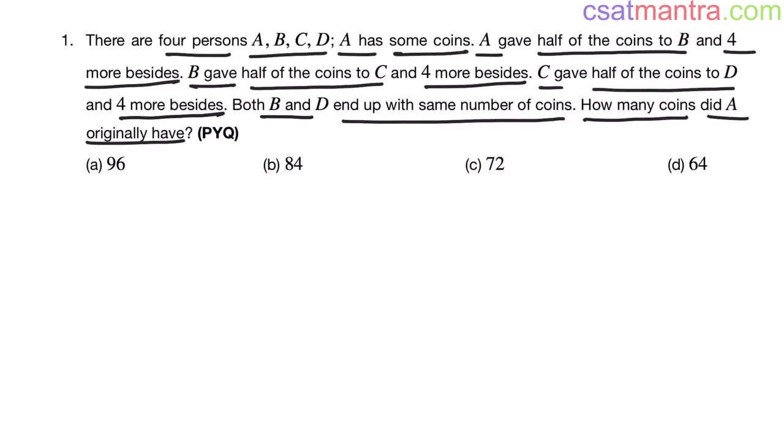This is a previous year question my friends. This question is from algebra chapter. We have four persons A, B, C and D. Now, A has some coins. Let us assume it as X. A gave half of the coins to B, so X by 2 and four more besides, so plus 4.